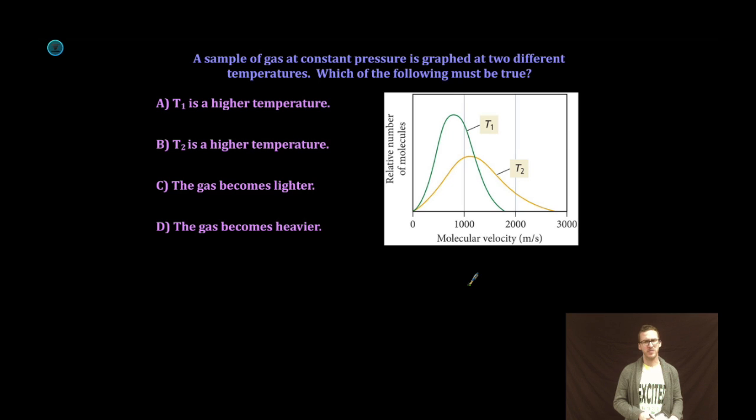Let's take a quick look at this first problem in which we're interpreting a Maxwell-Boltzmann distribution. It says a sample of gas at constant pressure is graphed at two different temperatures, which of the following must be true. A, T1 is a higher temperature. B, T2 is a higher temperature. C, the gas becomes lighter. Or D, the gas becomes heavier.